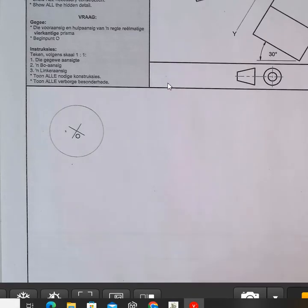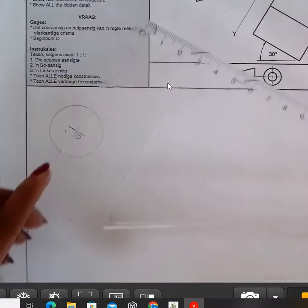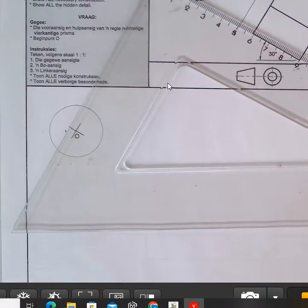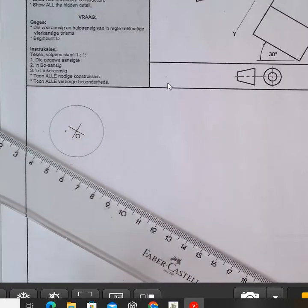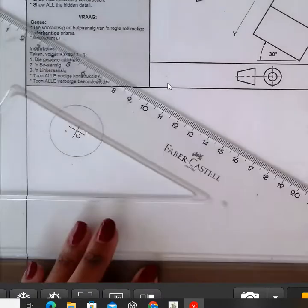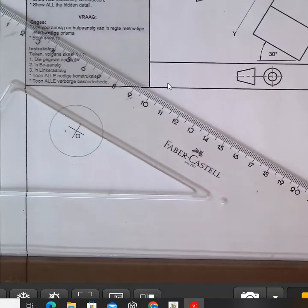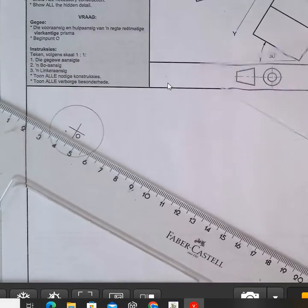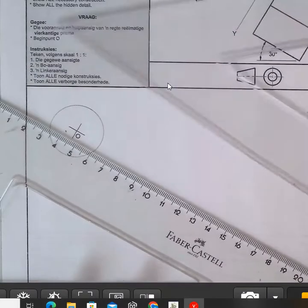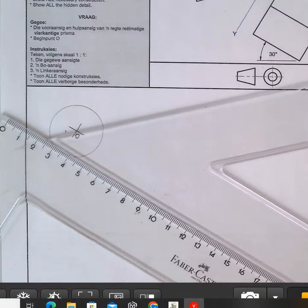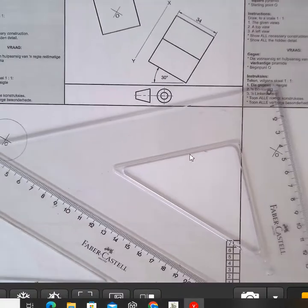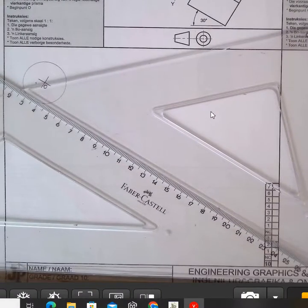And then from there, you are going to take your 30 degree set square. Ensure that it is sitting like this on your paper or your drawing board. Ensure that it is facing that direction, this direction here. So it is sitting like this on top of your T square. Let me just zoom out a little, just so you are able to see how my instruments are sitting.